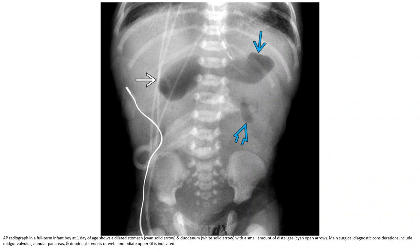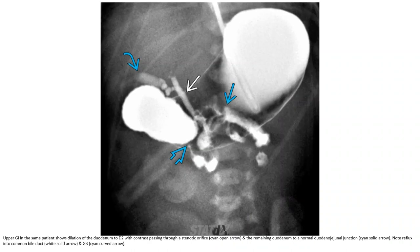The differential diagnosis on imaging includes midgut volvulus, annular pancreas, and duodenal stenosis, and an upper GI series may be indicated. Upper GI in the same patient shows the duodenum at D1-D2 with contrast passing through the duodenum, transitioning to normal bowel with peristaltic movement into the common bile duct and beyond.